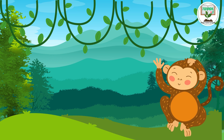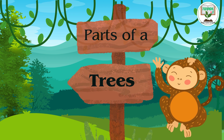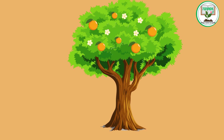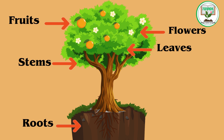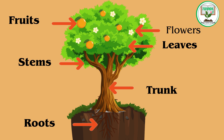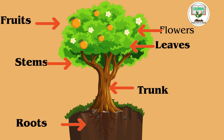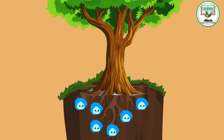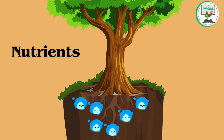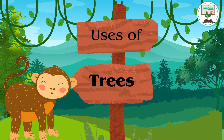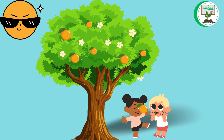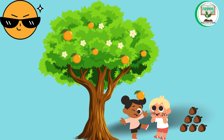Parts of a tree: trees have similar parts to other plants, including roots, stems, leaves, flowers, and fruits. The main trunk of a tree supports the branches and leaves, while the roots anchor the tree in the soil and absorb water and nutrients.